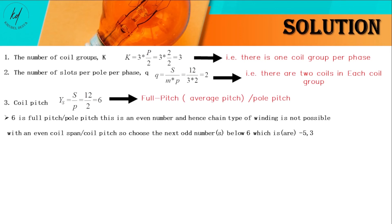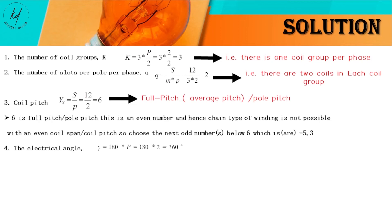Third, coil pitch: the number of slots divided by the number of poles, which is 6. Six is termed the full or average pitch, also called pole pitch, which is 180 degrees electrical. We can choose 5 as the coil pitch or coil span, since chain type windings have equal coil span — so 5 is the shortest pitch or coil span.